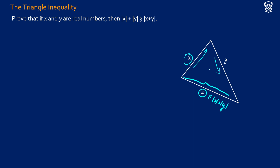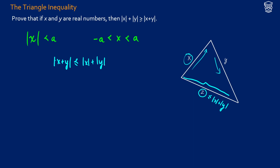So how can we prove this? We're going to use the definition of the absolute value. We say that the absolute value of x is less than or equal to a when x is between negative a and a. So what we want to prove is that the absolute value of x plus y is less than or equal to the absolute value of x plus the absolute value of y.